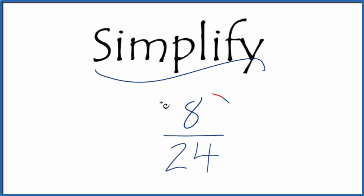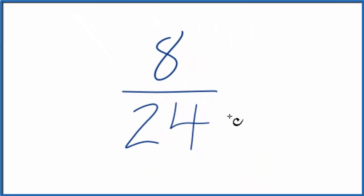Let's simplify the fraction 8/24. So what we're trying to do is figure out how we can write this in lower terms, 8 over 24.